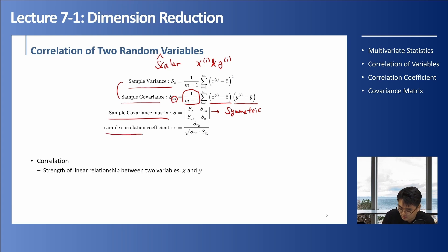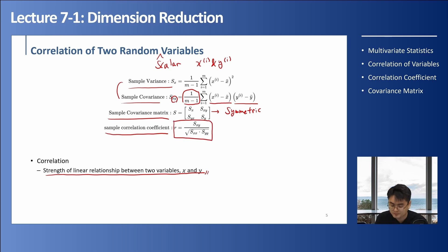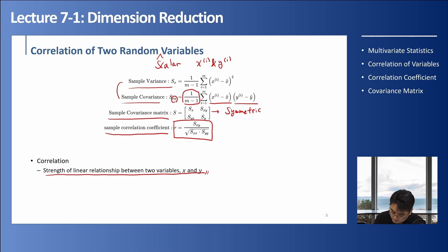When calculating the correlation coefficient R in our sample, we are quantifying the strength of the linear relationship between our two variables X and Y. R equals the sample covariance SXY divided by the square root of the variance of X times the variance of Y. You can think of this as a normalization of SXY.